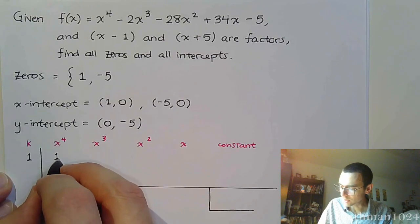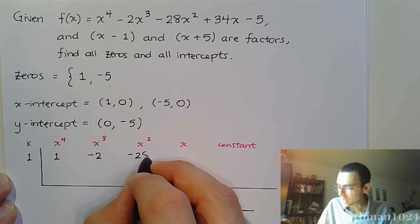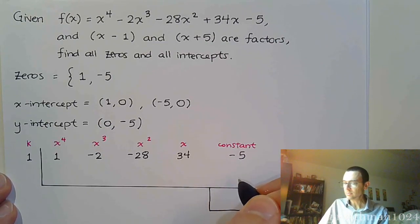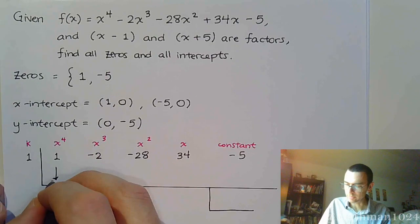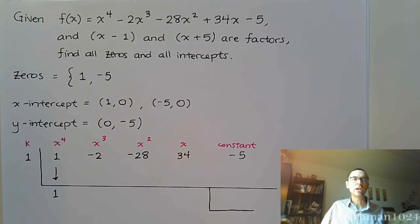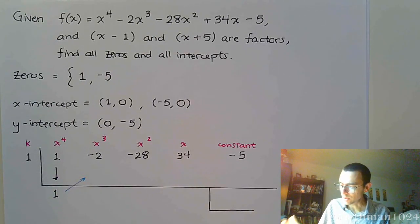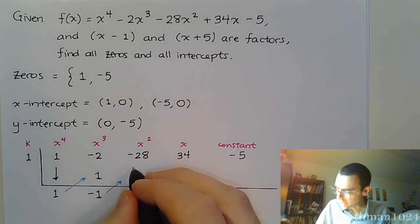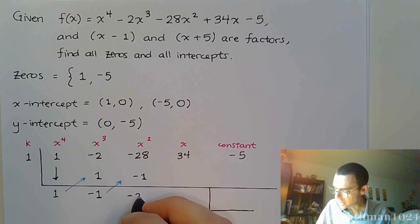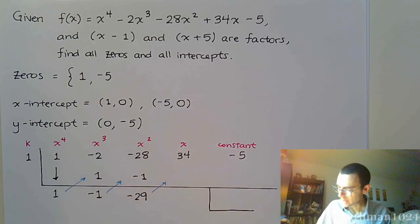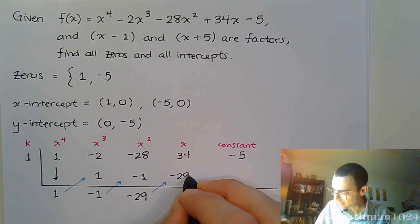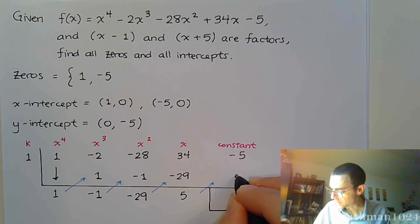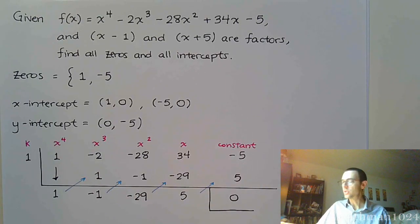x to the 4th, so that's going to be 1x to the 4th, minus 2x to the 3rd, minus 28x squared, plus 34x, minus 5. First things first is to bring down the 1. And as we've done so many times so far, we just need to multiply and add. So 1 times 1 is 1. Combine, we get negative 1. Multiply to get negative 1. Combine to get negative 29. Times 1 again. And now we get positive 5. And for the last time, 5 times 1 is 5. We get a remainder of 0, which is exactly what we're supposed to have.